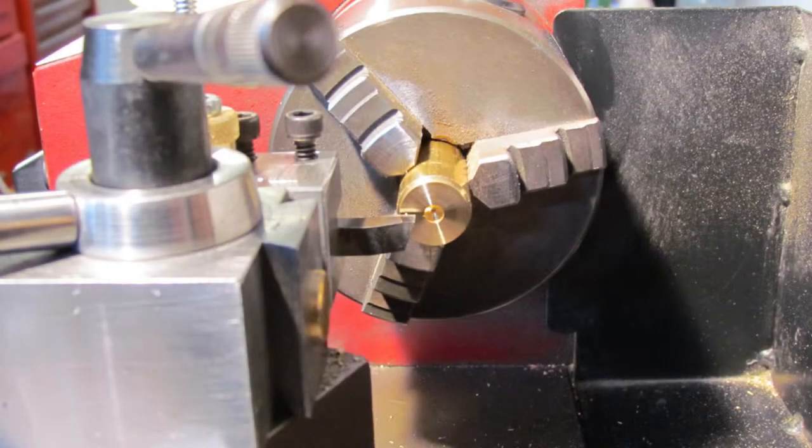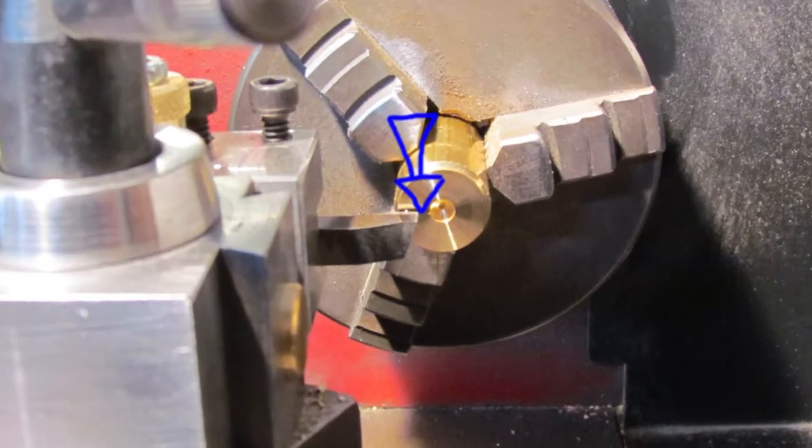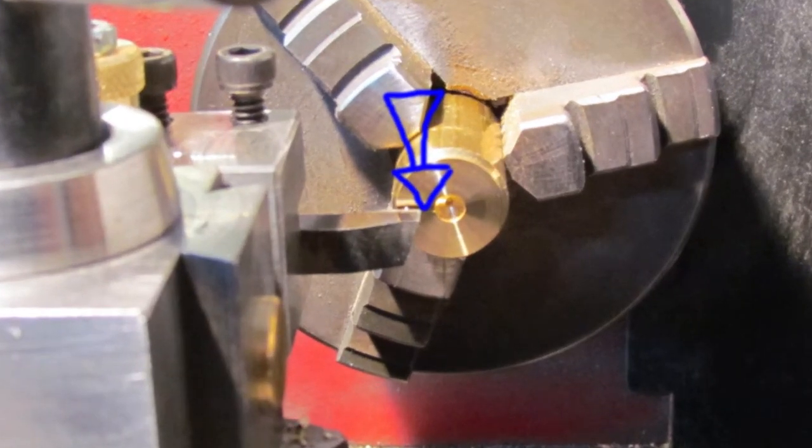In order for the cutting edge to cut effectively, the edge needs to be a little lower than the center point of the material in the chuck. The blue arrow points to the tool tip and needs to be a little lower than the center as shown by the red line.